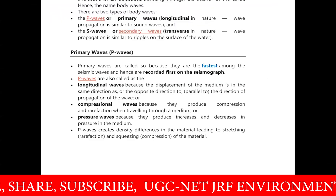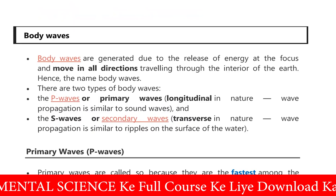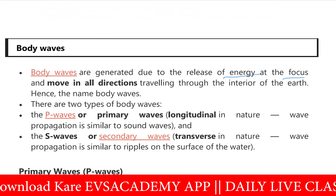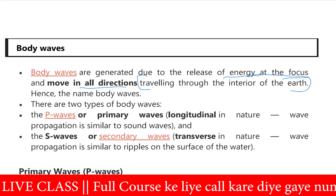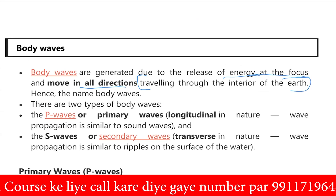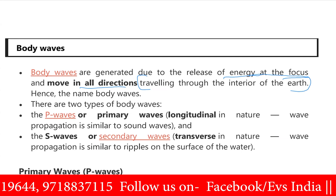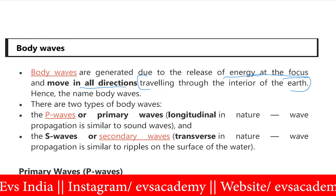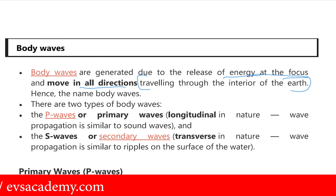Body waves are generated due to the release of energy at the focus point and move in all directions through the interior of the earth. There are two types of body waves: P waves, or primary waves, which come first in any earthquake, and S waves, or secondary waves, which arrive later. Primary waves are also called longitudinal waves because of their longitudinal movement, while S waves are called transverse waves because their wave propagation is similar to ripples on a water surface.